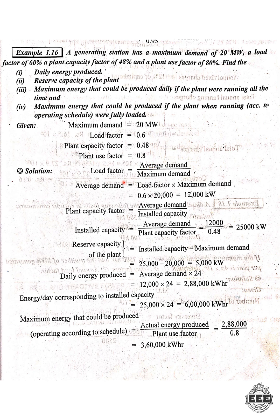Next, we calculate the average demand. The formula is: load factor equals average demand divided by maximum demand. So by cross multiplication, average demand equals load factor into maximum demand. That gives us 0.6 into 20,000, which equals 12,000 kilowatts. So average demand is 12,000 kilowatts.